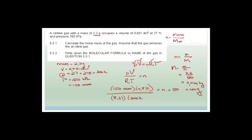They ask to write down the molecular formula or name of the gas. The molar mass is 44 grams per mole. Carbon dioxide CO2 works out to be 2 times 16 is 32, plus carbon which is 12, which equals 44. So the gas is carbon dioxide, CO2.